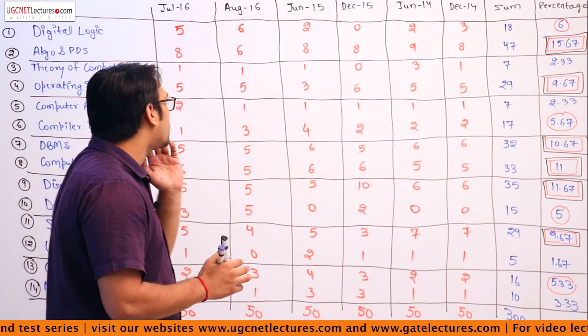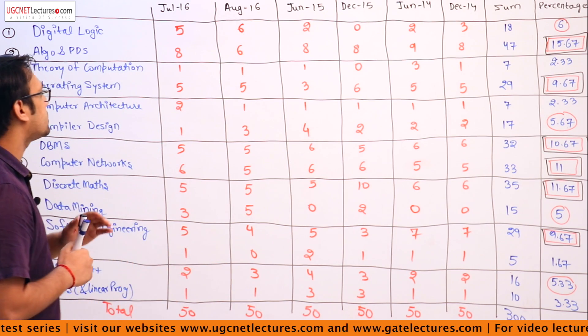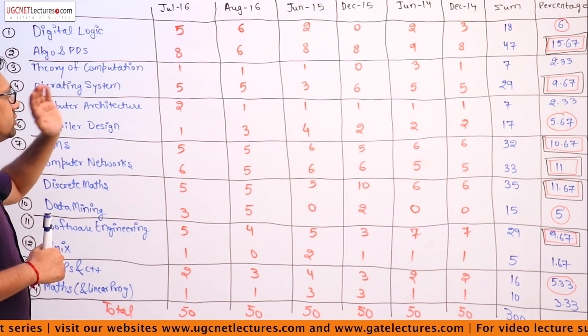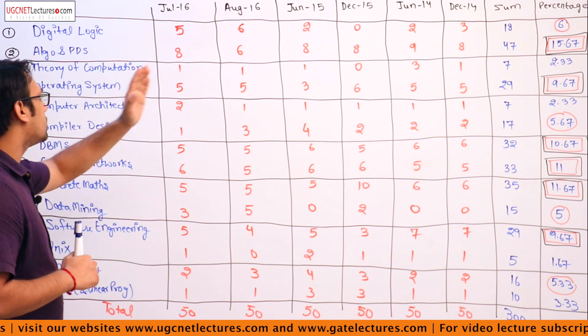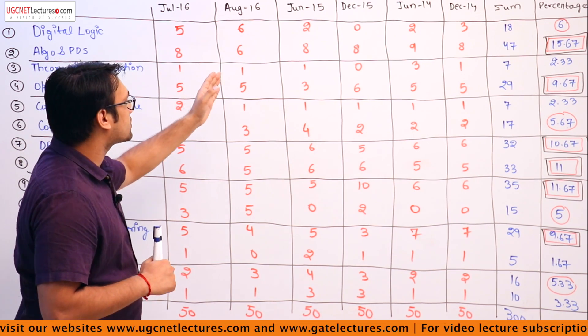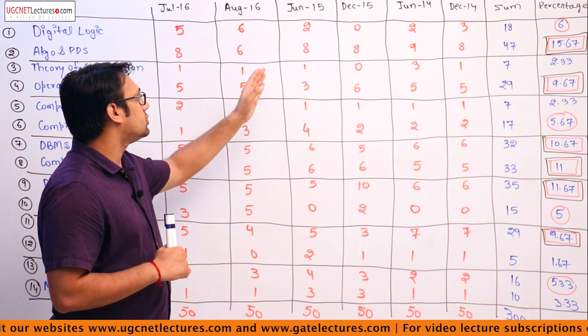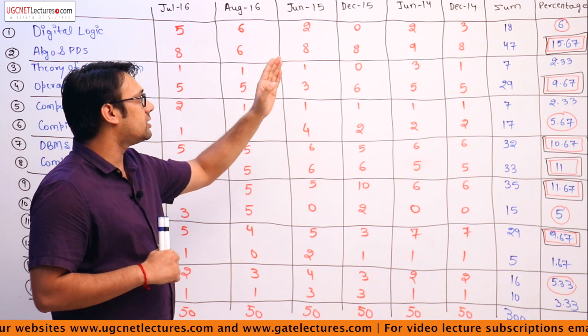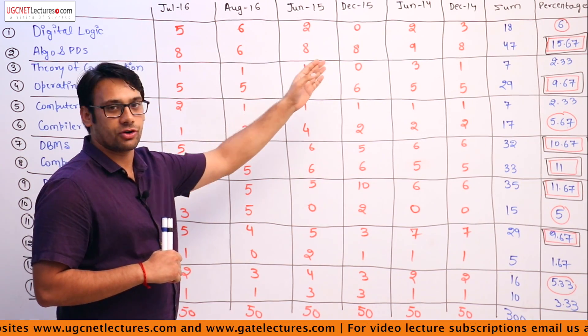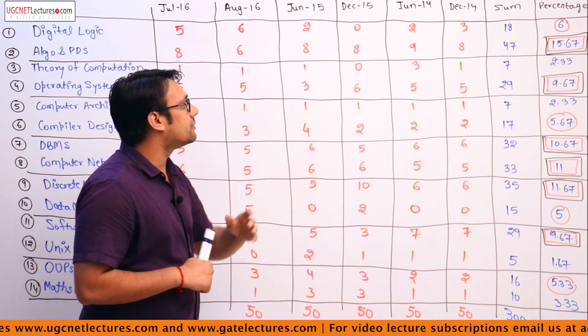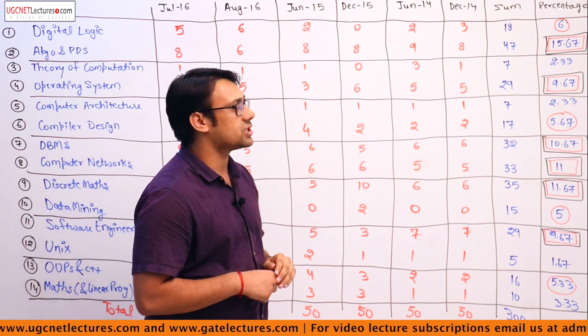This is a paper 2 analysis covering the July 2016 paper, August 2016 question paper, June, December, January, June 2014, and December 2014 question paper.